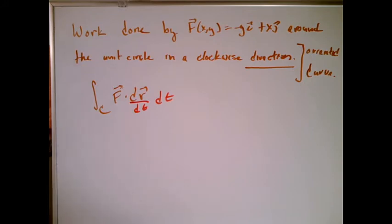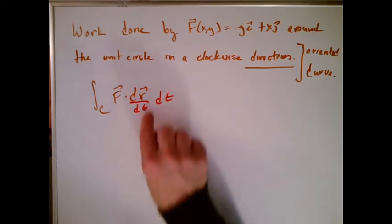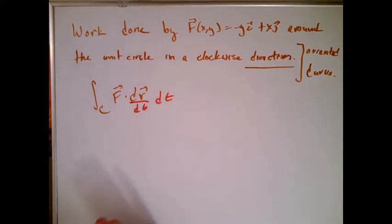It also tells us, for example, that the variable needs to be t. And by the way, I have dr dt, and that means I need a parameterized curve for r. And then I need dr dt, and we're off and running. So this is where we're going to start.